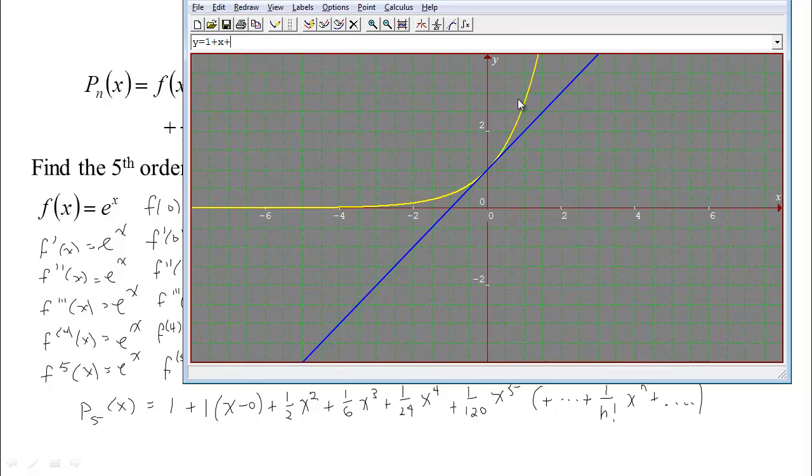And then we add in our next term, one half x squared. So I'll just put in x squared over 2. Getting better, right? And then add in x cubed over 3 factorial—that's 6. And then add, oops, add in x to the 4th over 24. See how these approximations are getting better and better here. x to the 5th over 120. There's p5.